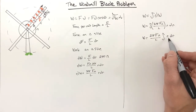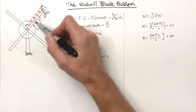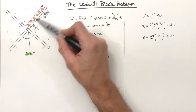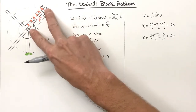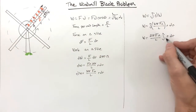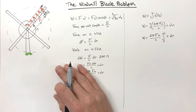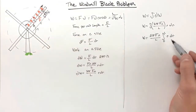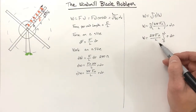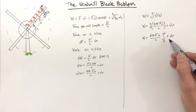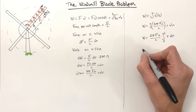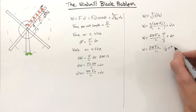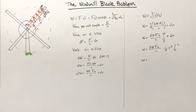The limits of integration are from zero to L — from the center of the blade out to its full length. If the blade were mounted on a stick or had different geometry, the limits would change, but here we go from zero to L. Integrating r gives (1/2)r², evaluated from zero to L.